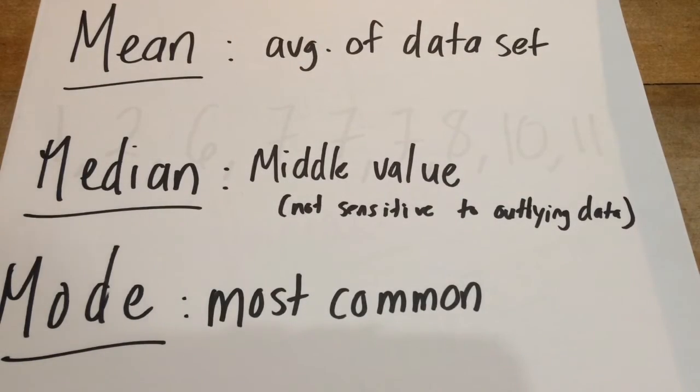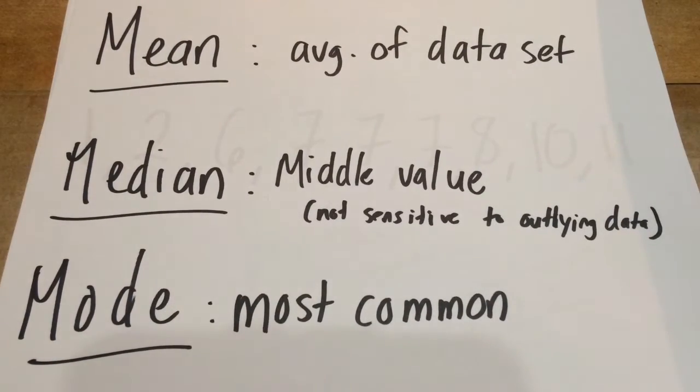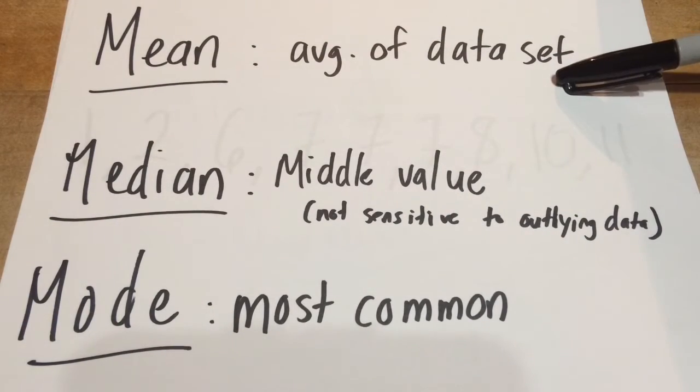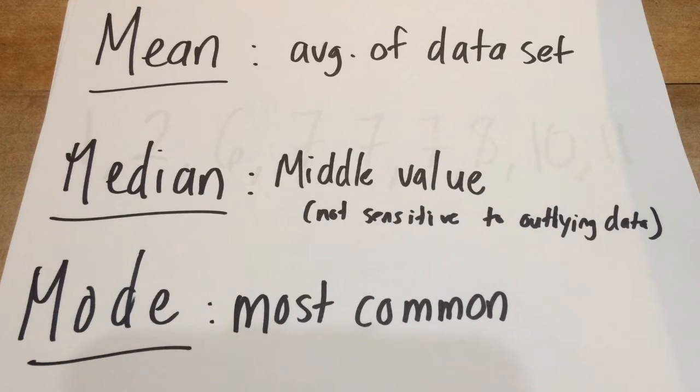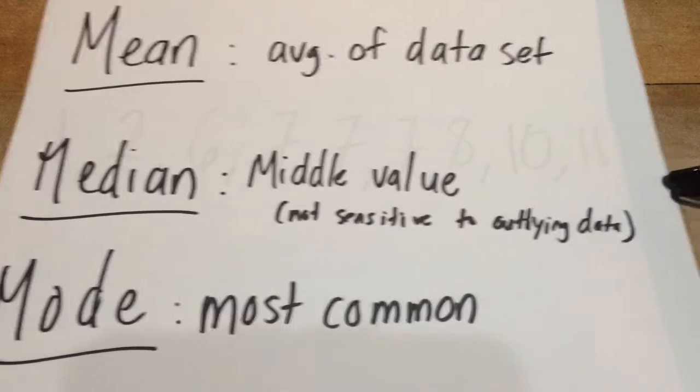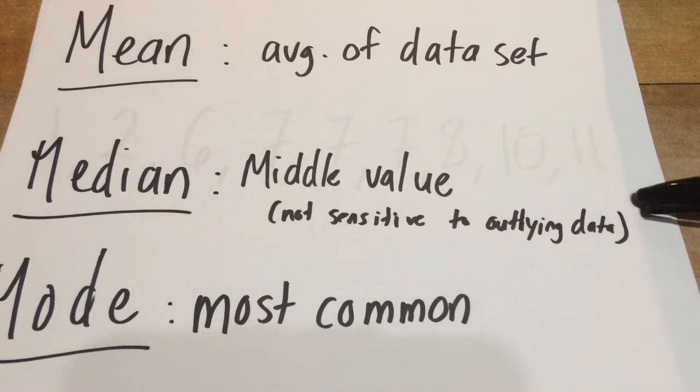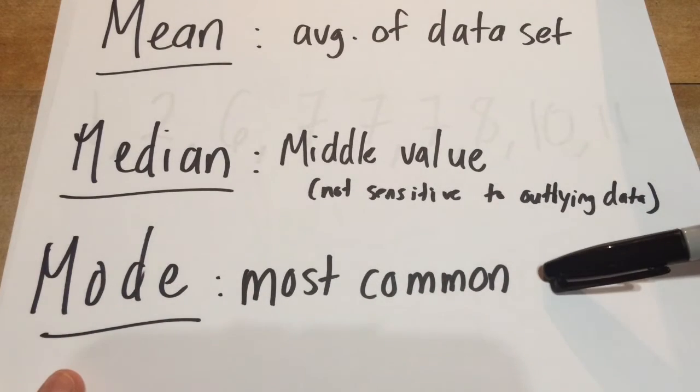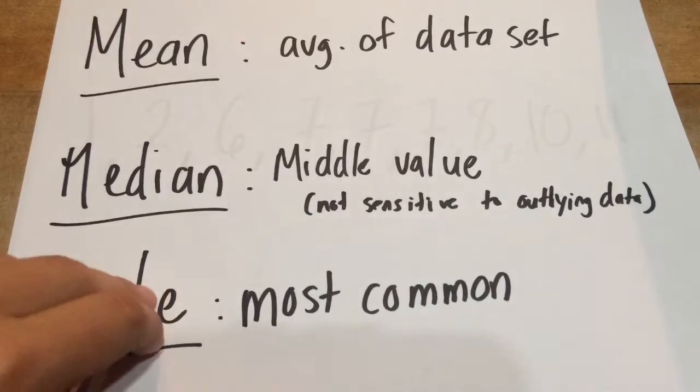Alright, so first off, some techniques you've probably already used in many classes before are mean, median, and mode. Now our mean is just an average of our data set. So we take all the values in the data set, we add them up, and then we divide it by the number of values there. Our median is our middle value in the set, and it's not sensitive to outlying data. So that's why it's useful. Sometimes we have outliers that can really screw up our mean, and so we want to look at the median. And finally, the mode is the most common value of our data set.